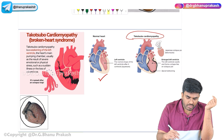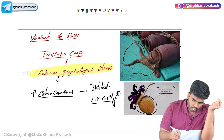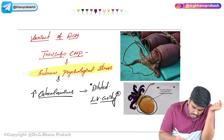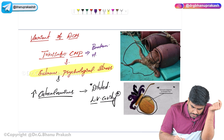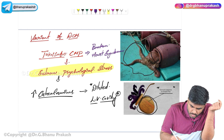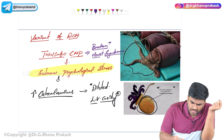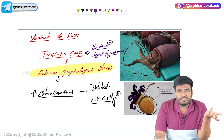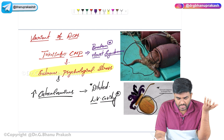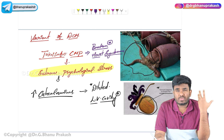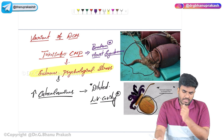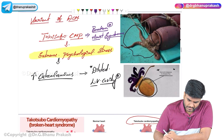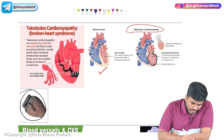Takotsubo cardiomyopathy is also called broken heart syndrome. Whenever there is a heartbreak — like hearing about the death of a close one — extreme psychological stress leads to excessive catecholamine release, causing dilation of the left ventricular cavity. That is why it is called broken heart syndrome.